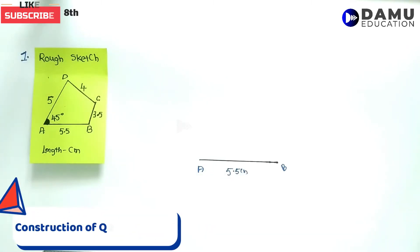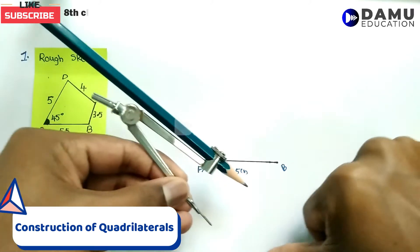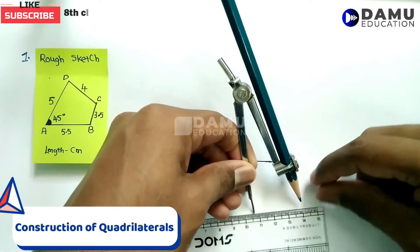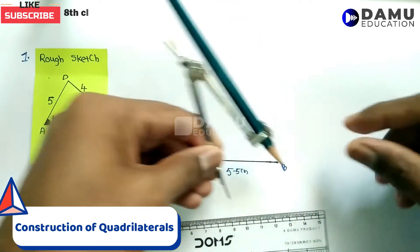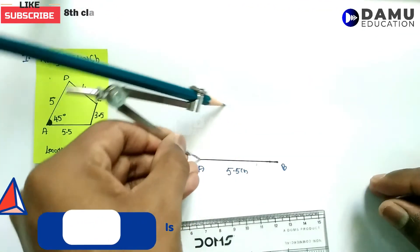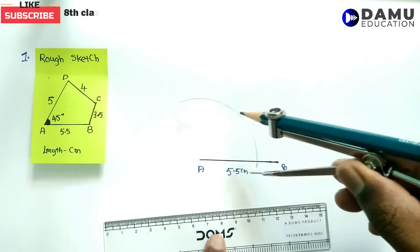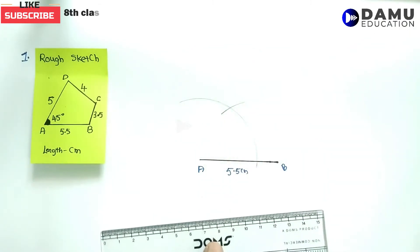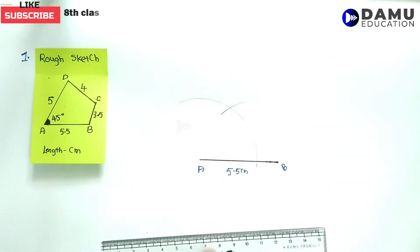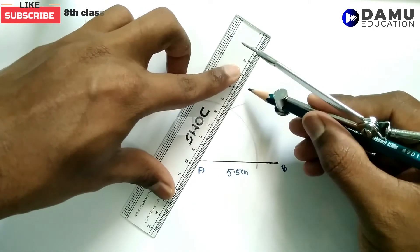Next we need to draw a 45-degree angle. Using a compass, take around 3 or 4 centimeters and draw a 60-degree angle. Keep the compass at point A and draw one arc, then without changing the length draw one more arc. If you join this point, we get 60 degrees.